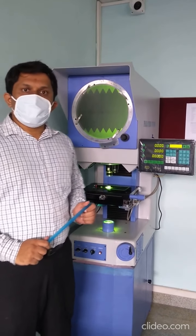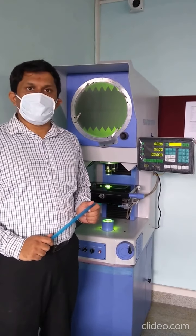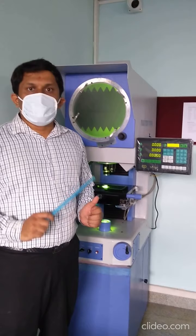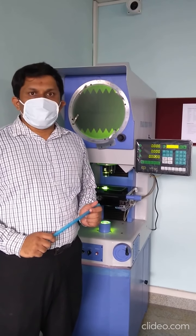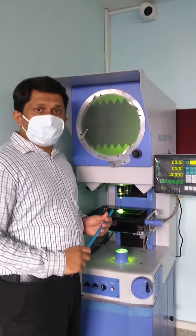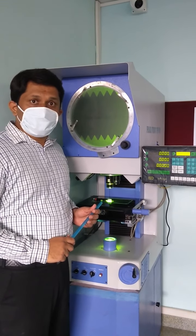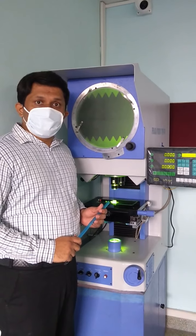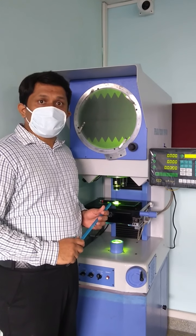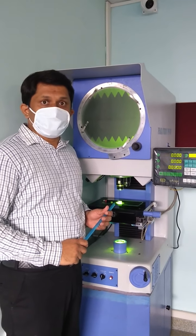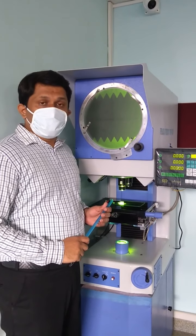Profile Projector is an optical comparator that uses the principle of optics to inspect the manufactured part. In this optical comparator, the magnified silhouette of the part is projected upon the screen and the details like geometry and dimensions are compared with the prescribed limits. So silhouette refers to the outline of the part.